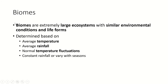One kind of very large ecosystem is a biome. That's the other end of the extreme — the fur of a sloth is a really small ecosystem, while a biome is a really large ecosystem. A biome is a large ecosystem with similar environmental conditions and life forms found in different places on the earth.